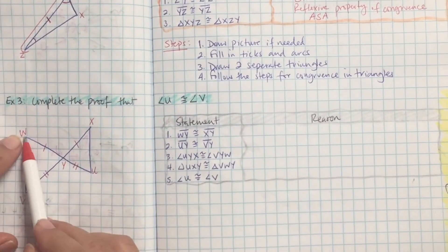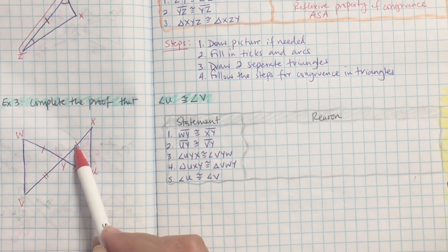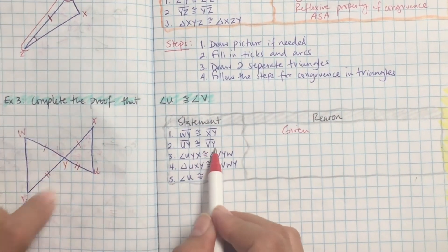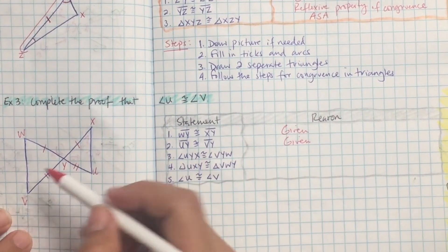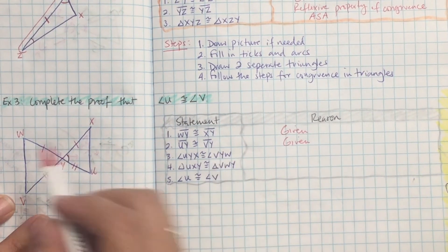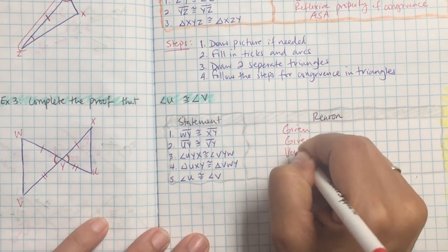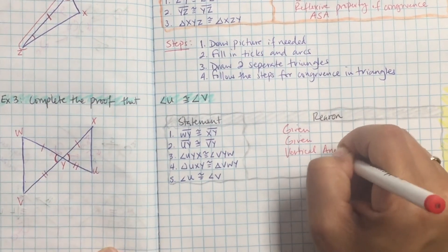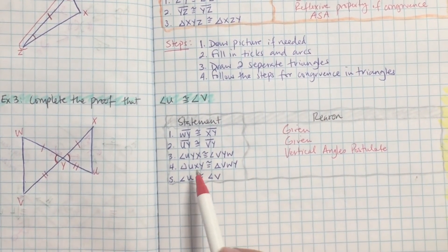Let's do another full example. Why is that side equal to that side? They both have one tick — given in the problem. Why is that side congruent to that side? They have two ticks — also given. Why is angle UYX congruent to angle VYW? Those are vertical angles — vertical angles postulate.